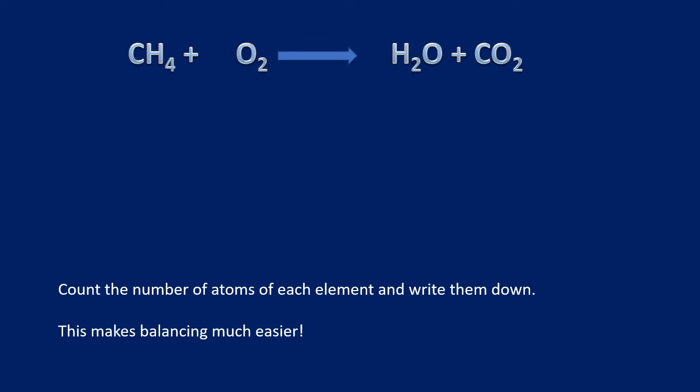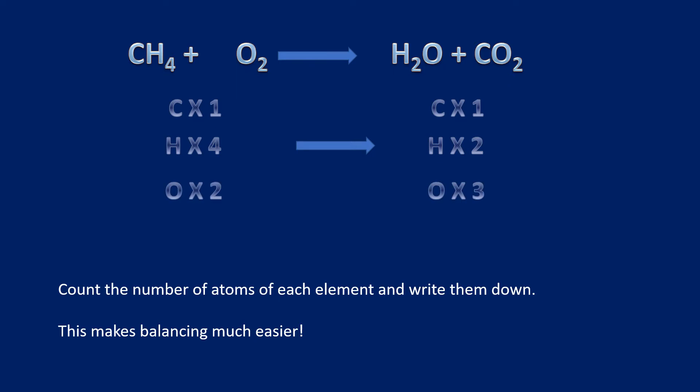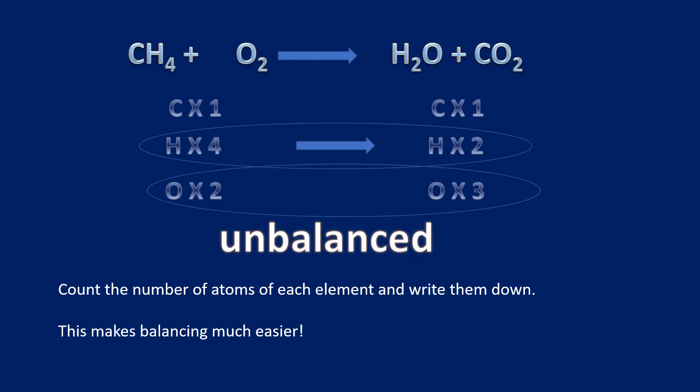Let's look at a different example. This time we have one carbon on the left in CH4 and one carbon on the right in CO2. On the left we have four hydrogens, on the right we have two — so this equation is not balanced. Continuing through: we've got two oxygen atoms on the left and three oxygen atoms on the right, so this is not balanced.